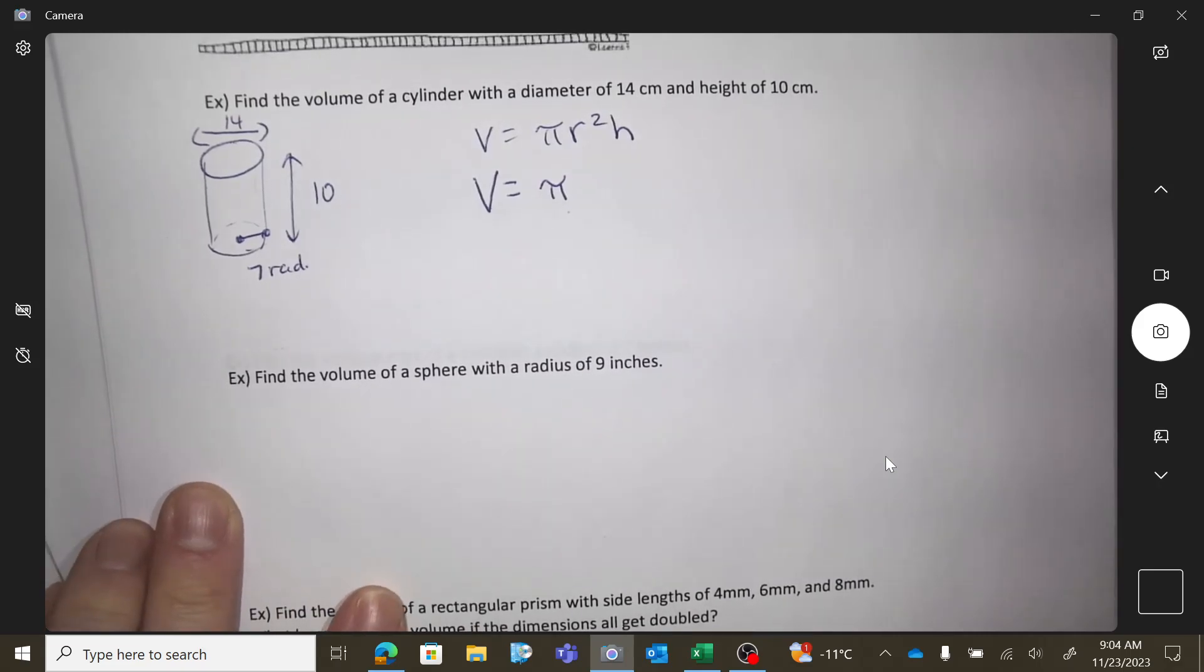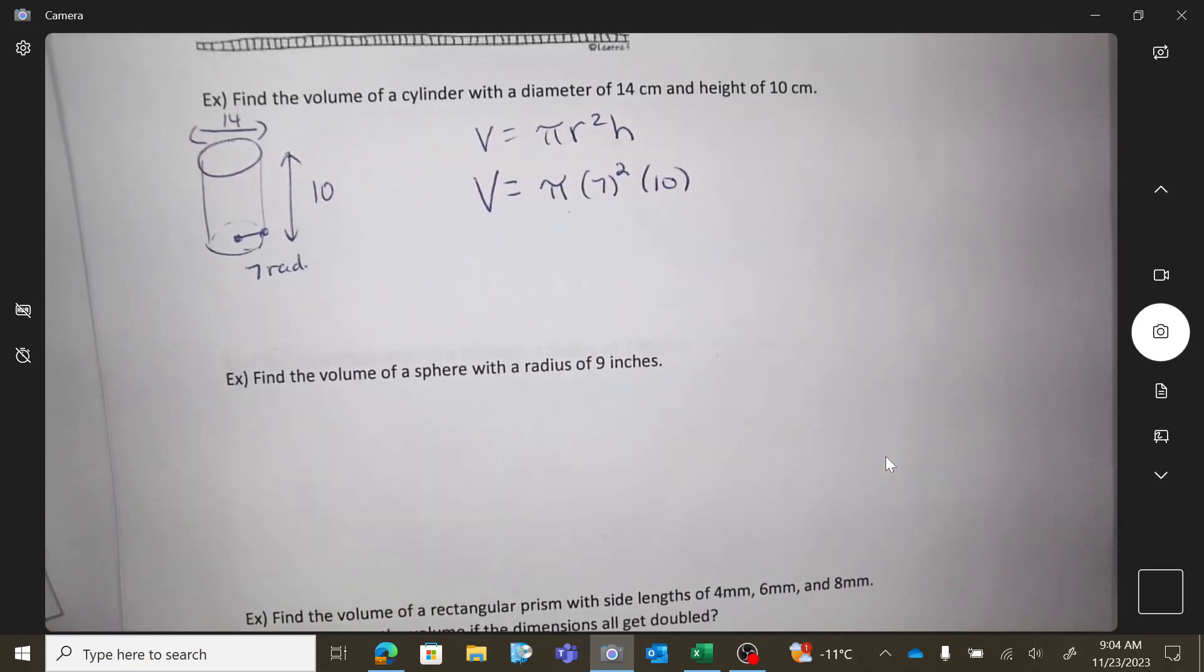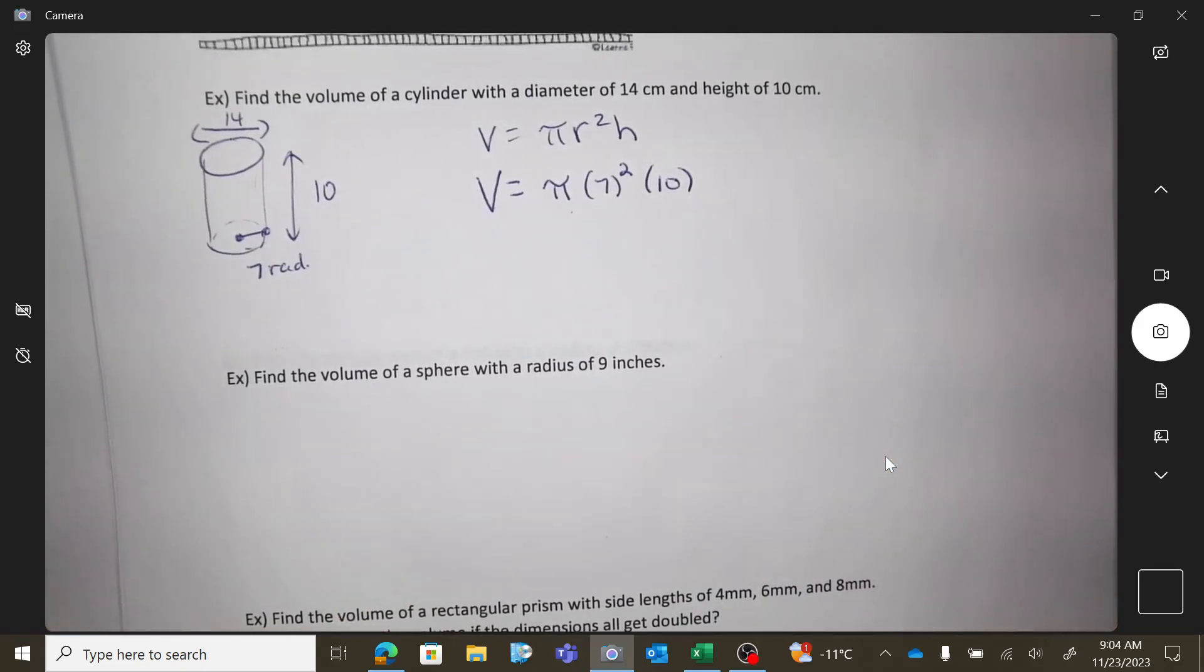Okay, so seeing that, 7 squared times 10. So you need to run that all through your calculator at once. Does everybody know where their pi button is? Because you're not allowed to use 3.14. You're using the pi button.